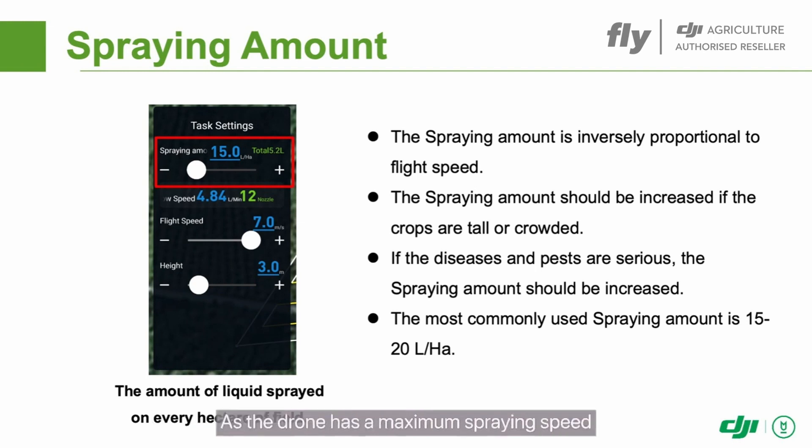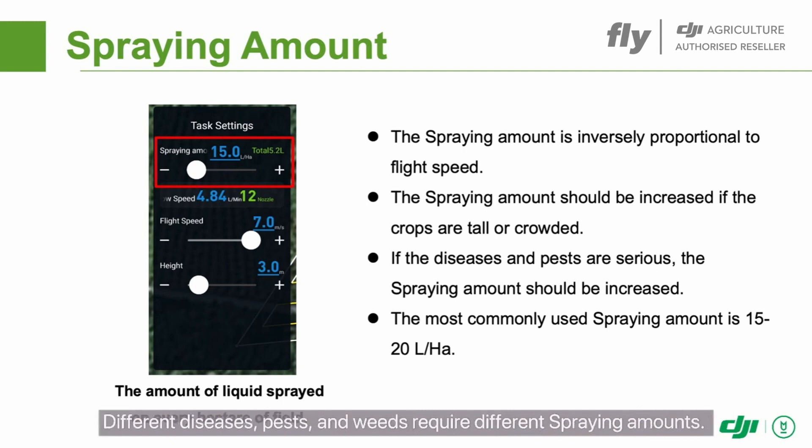As the drone has a maximum spraying speed, the larger the spraying amount, the lower the flight speed. Different diseases, pests, and weeds require different spraying amounts.